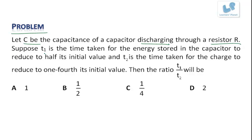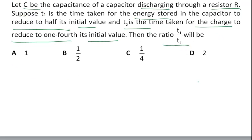Suppose at time T1, the energy stored in the capacitor reduces to half its initial value. And T2 is the time taken for the charge to reduce to one-fourth of its initial value. Then the ratio of T1 by T2 will be.